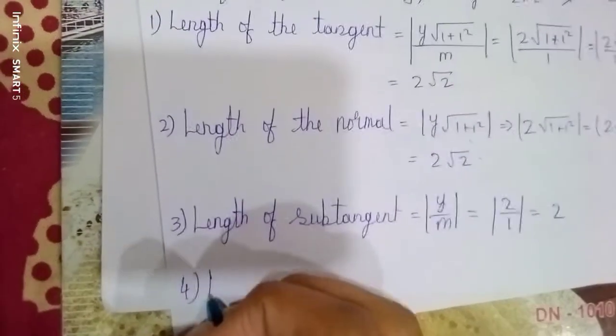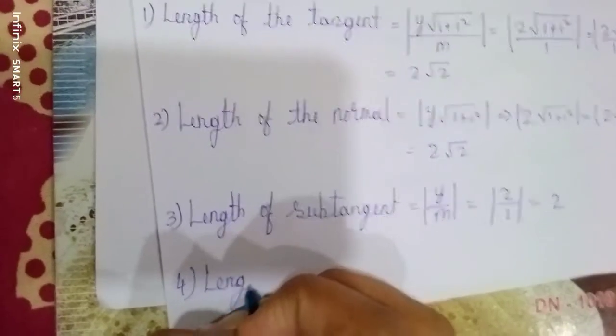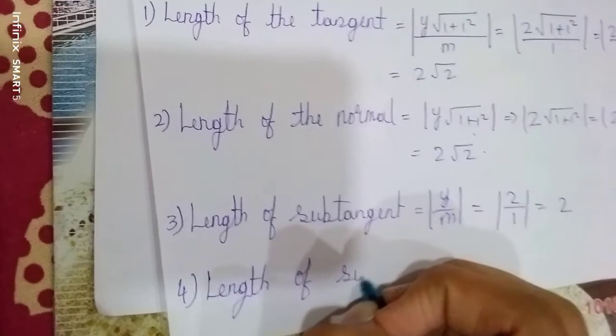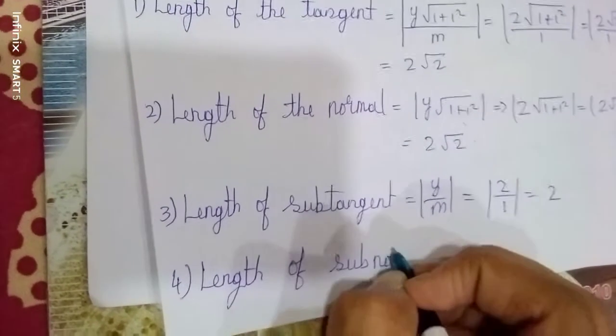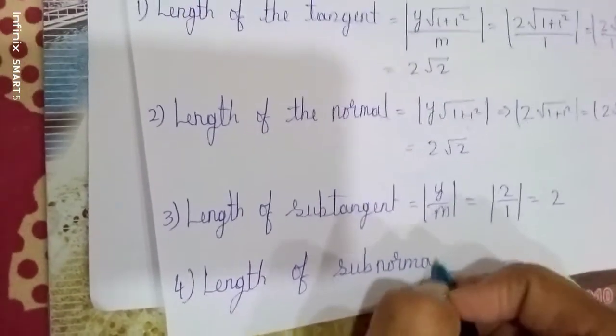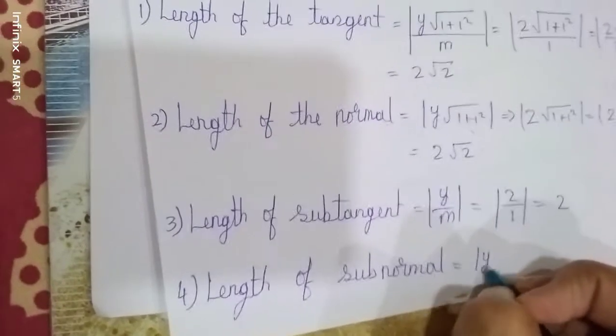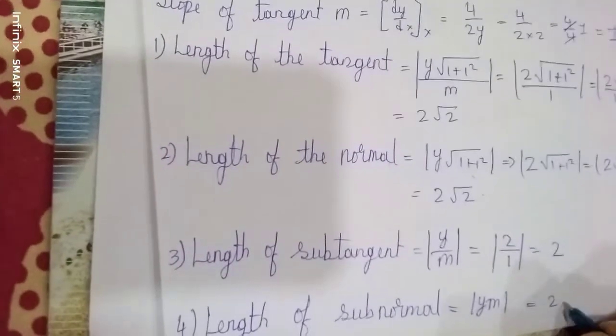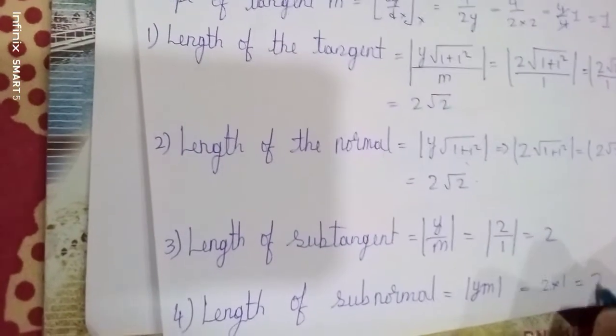Length of subnormal = |y·m|. So y = 2, m = 1. Therefore |2 × 1| = 2. This is the required answer.